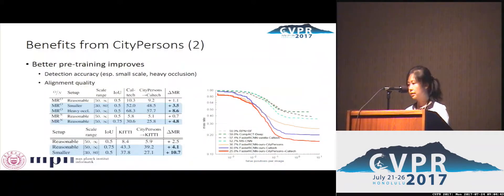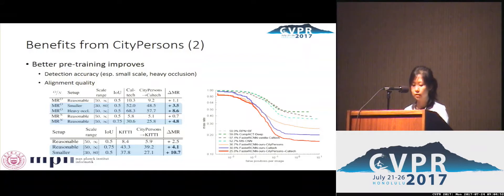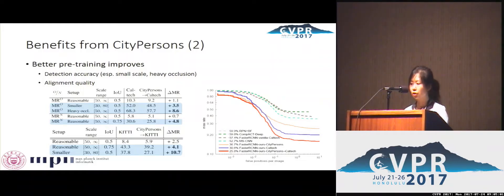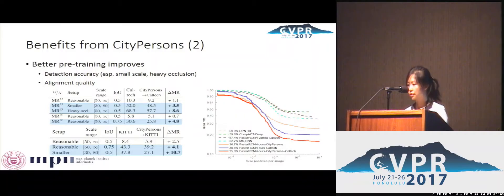The second benefit is it can be used as a good pre-training set, as it provides high-quality and diverse data. The models pre-trained on CityPersons and then fine-tuned on the target set obtain better quality, especially for harder cases like small-scale and heavy occlusion. Also, pre-training on well-aligned samples largely improves the alignment quality of the resulting detections.